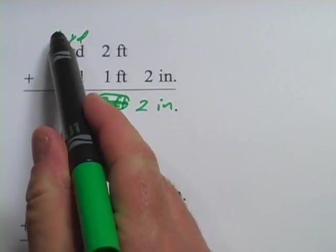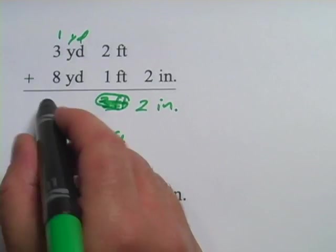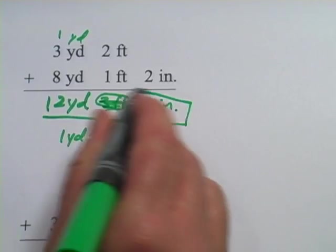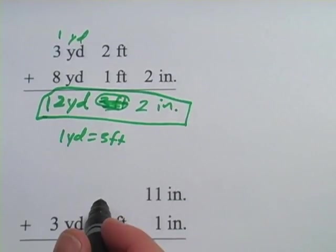Now, I'm going to add my yards, one and three is four, and eight is twelve, so twelve yards. So my final answer is twelve yards and two inches.